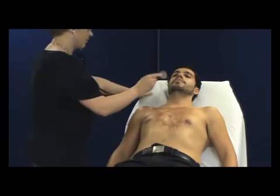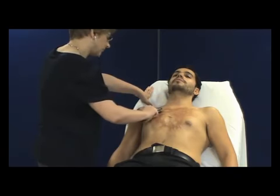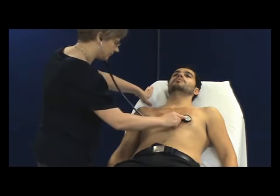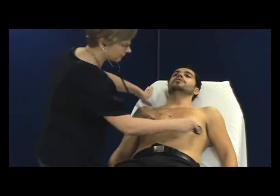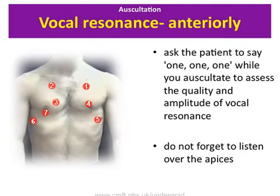When examining for vocal resonance, ask the patient to say 111 while you auscultate to assess the quality and amplitude of vocal resonance. Place the stethoscope in all the areas you auscultated previously and listen to see whether vocal resonance is normal, decreased, or increased. Vocal resonance is the speaking equivalent of the breath sounds and can be used to confirm what you suspected on auscultation. You should expect normal vocal resonance over areas of vesicular breathing, decreased vocal resonance over areas of decreased breath sounds such as over a pleural effusion or an area of collapse, and increased vocal resonance over an area of consolidated lung.